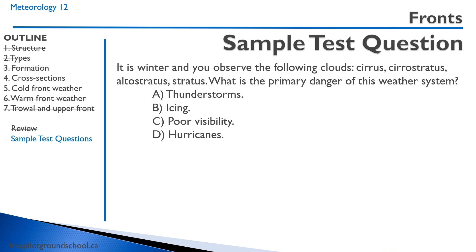Practice question: It is winter and you observe the following clouds — cirrus, cirrostratus, altostratus, stratus. What is the primary danger of this weather system? Remember what kind of front is associated with these clouds — that would be a warm front. What kind of precipitation in winter do we get from a warm front? We'll get ice pellets and freezing rain, so icing is going to be a big consideration — that's the most dangerous thing. It won't be thunderstorms; we won't see thunderstorms in a winter warm front.